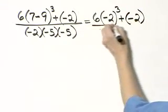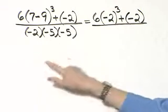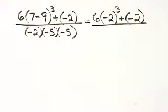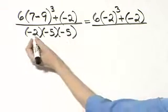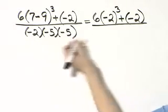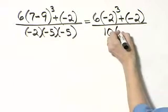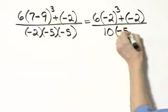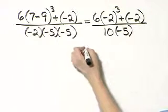At the same time, we'll work in the denominator. That's negative 2 times negative 5 times negative 5, so we can certainly multiply from left to right. Negative 2 times negative 5, that's positive 10, and I'll multiply that by negative 5 in just a moment.